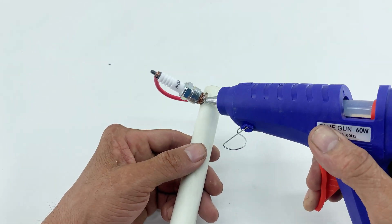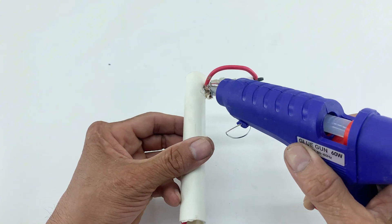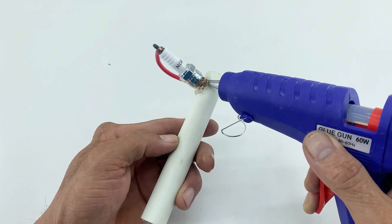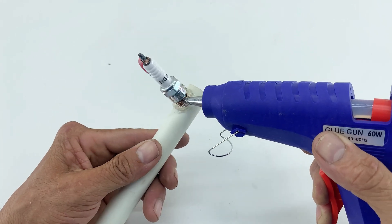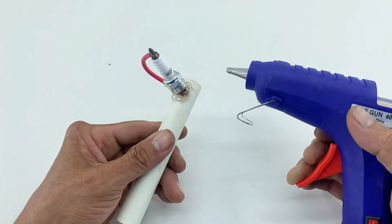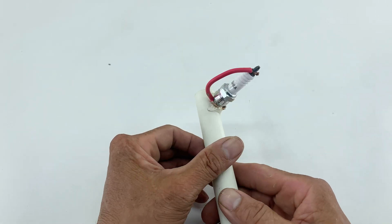To ensure everything stays perfectly in place and add extra insulation, I'm using hot glue to secure the spark plug within the PVC pipe. I apply glue generously around the base of the spark plug where it meets the pipe. This will create a very sturdy and durable connection, essential for a reliable tool.